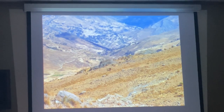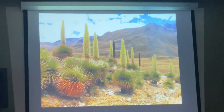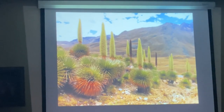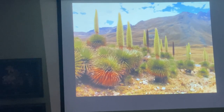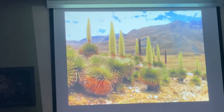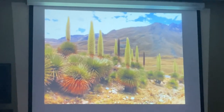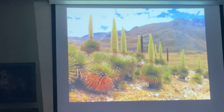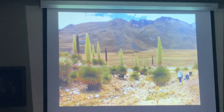This is the first time I actually saw Puya raimondii well — still far, and I didn't know the best place to go. This is the first time I saw it in a good place where you can drive the bus right next to them without much hiking. Now you can see the inflorescence with dead flowers — after they flower, the plants die. This is called a mass flowering event.